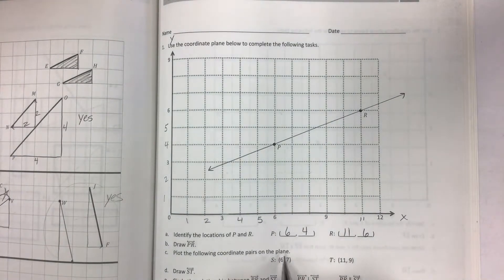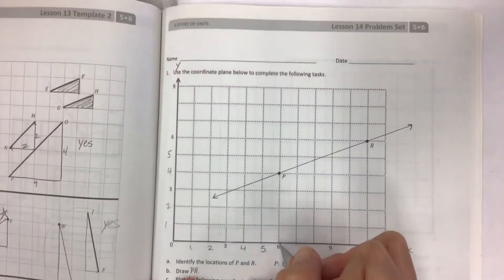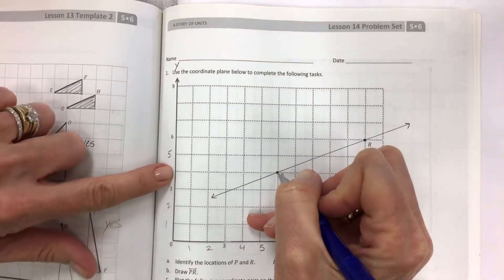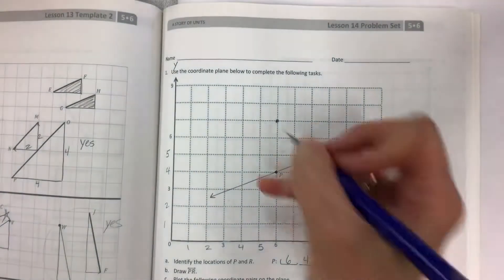Plot the following coordinate pairs on the plane. They're going to tell us put this point 6, 7. So 6 and go up from 4, 5, 6, 7. Okay, that's your point S.